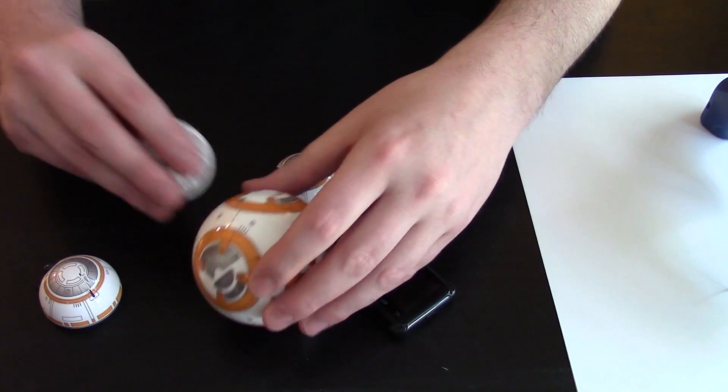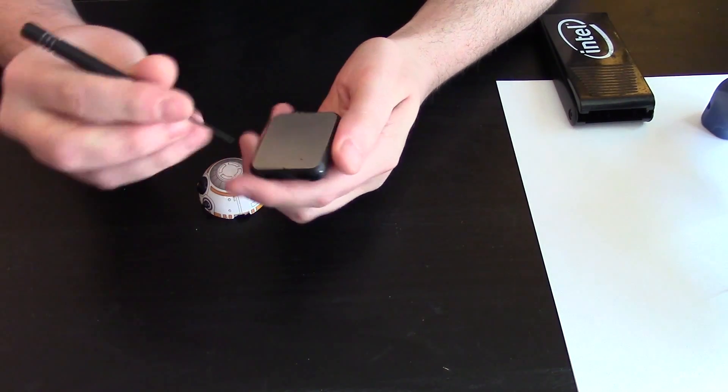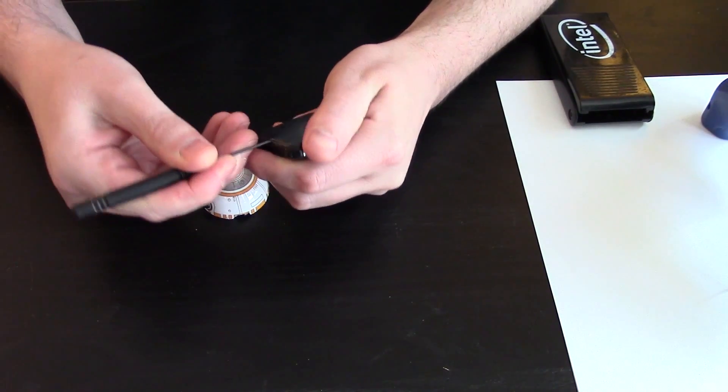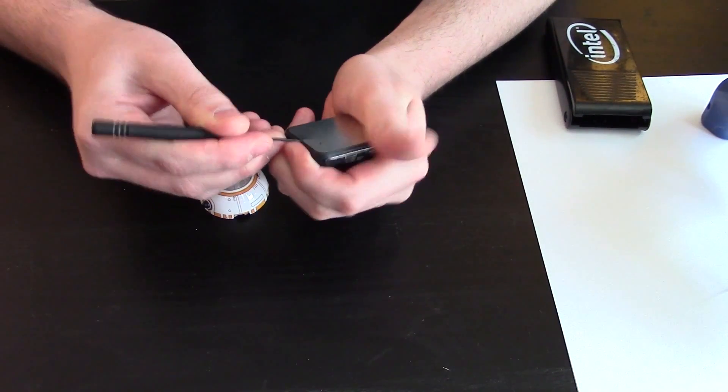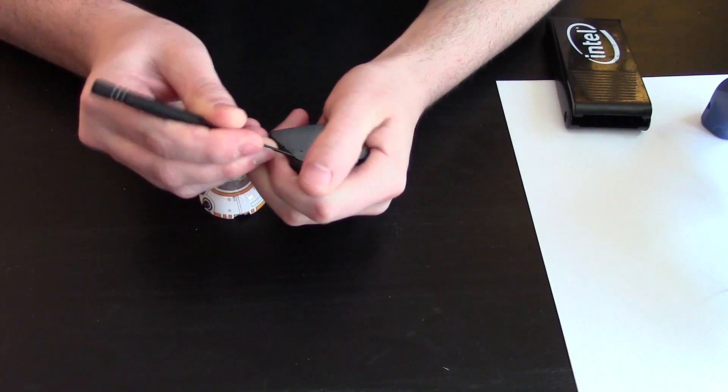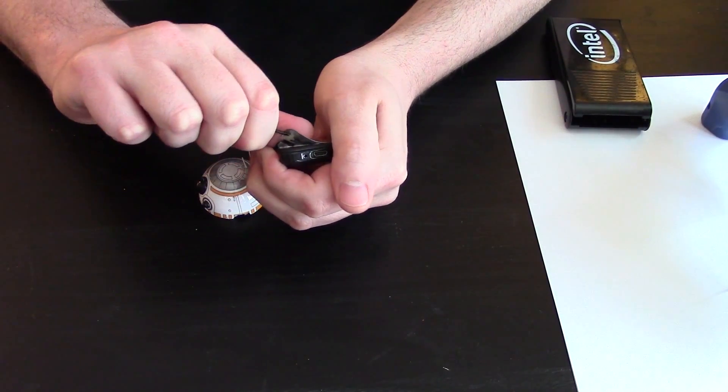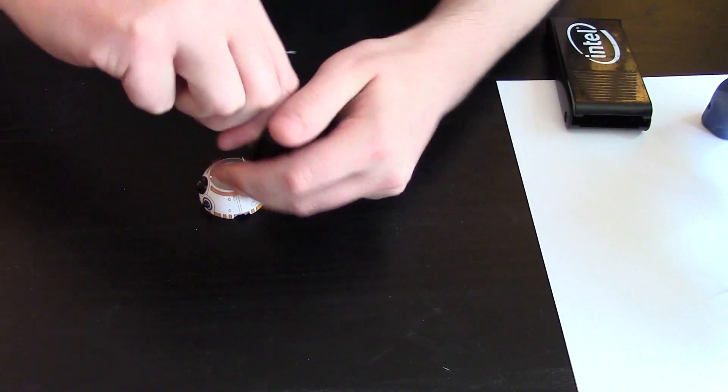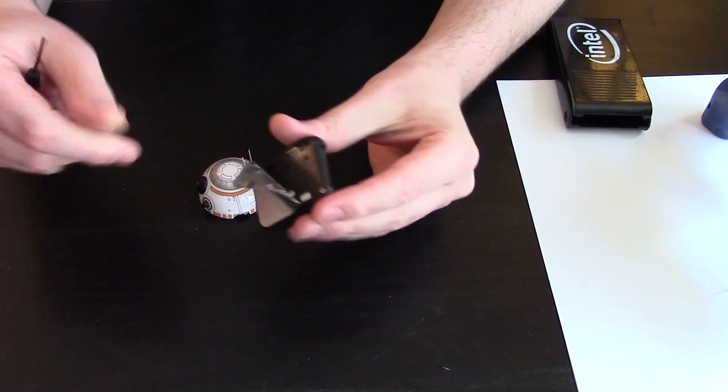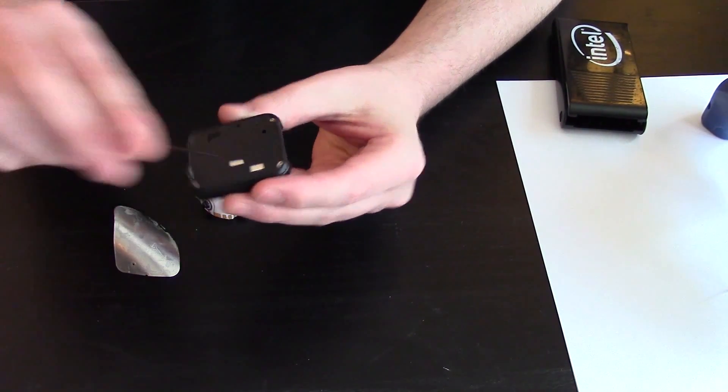Now this does have a little notch where it looks like the plate can get peeled off. Most of these are just adhesive glue. So we'll see if we have any screws inside. Okay so we do have four small screws in here.